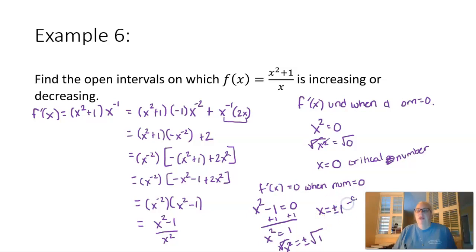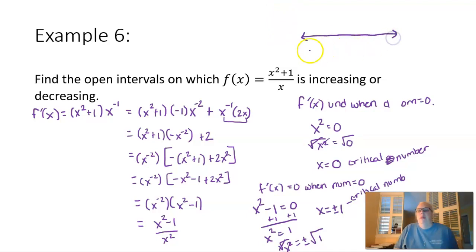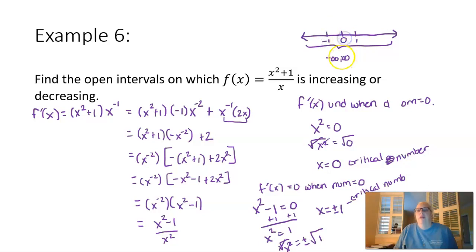So we have three critical numbers: negative 1, 0, and positive 1. On the number line, these split it into four intervals: from negative infinity to negative 1, from negative 1 to 0, from 0 to positive 1, and from positive 1 to positive infinity.